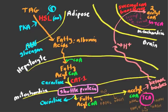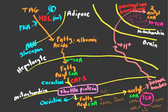When acetoacetate and beta-hydroxybutyrate go out into the blood, they release a proton — they are acids. At physiological pH, with a pKa of around four, they release a proton. The downside of these ketone bodies circulating in the blood is that they make the blood acidic. When levels are very high, this can lead to ketoacidosis, a condition where these molecules lower blood pH.